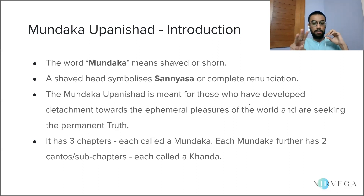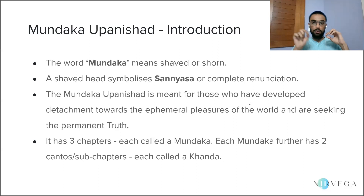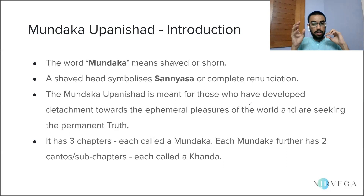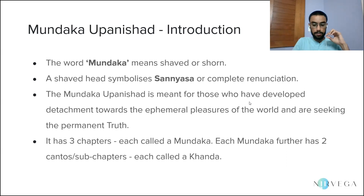The Mundaka Upanishad has three chapters, each of which is called a Mundaka — just like each chapter in the Prashna Upanishad is called a Prashna. Each of these Mundakas is further divided into two sub-chapters called a Khanda. Khanda means a part or a division. So there are three Mundakas and each Mundaka has two Khandas, making six Khandas in total.